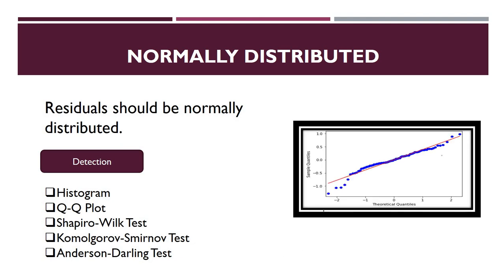For example, using a QQ plot — the red line represents the expected normal distribution and the blue points represent the residuals. If all residuals lie on the red line, the residuals are normally distributed. Here, most values are plotted on the red line with only a few deviating, so the residuals are not completely normally distributed, but maximum values are.